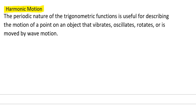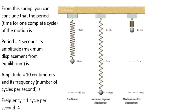Let's take a look at an example. From this spring, you can conclude that the period, or the time for one complete cycle of the motion, is 4 seconds. Its amplitude, or the maximum displacement from the equilibrium. So here's our equilibrium right here. That's our equilibrium.